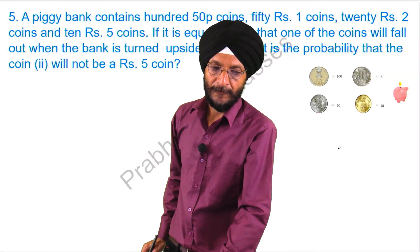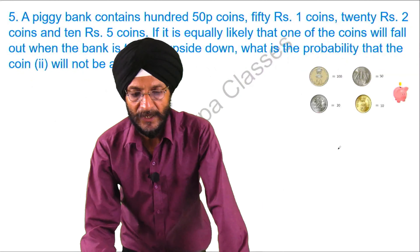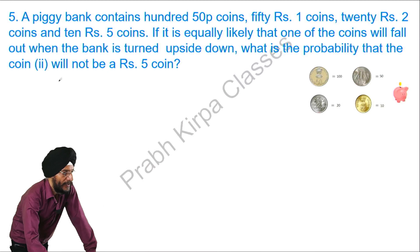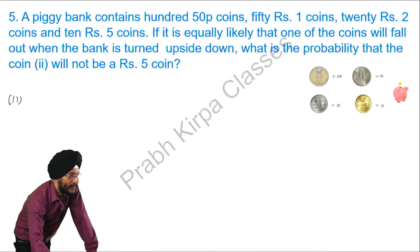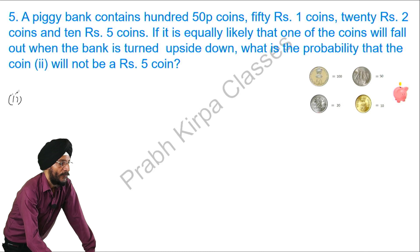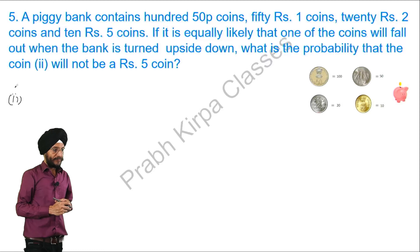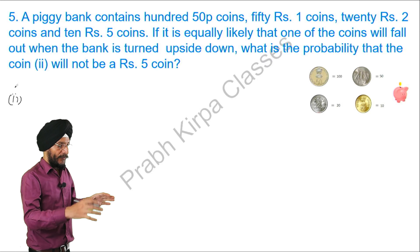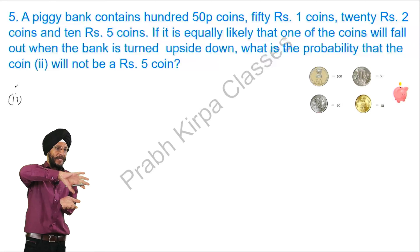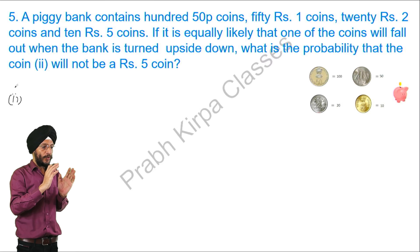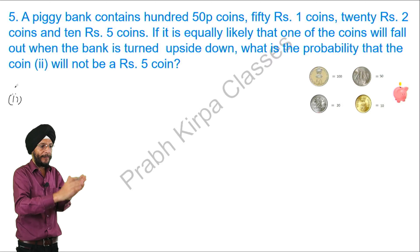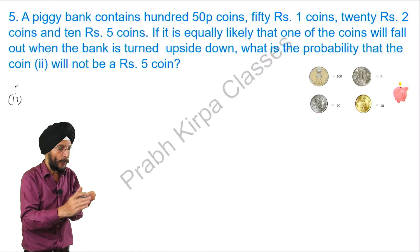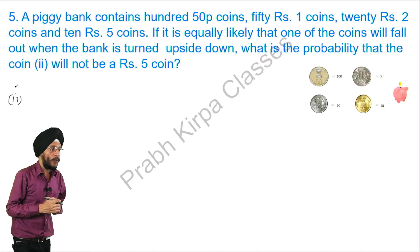Now the second part says: what is the probability that the coin will not be a 5-rupee coin? In other words, when the piggy bank is turned upside down, the coin that comes out should not be the 5-rupee coin, but can be any other coin — the 50 Paisa coin, 1-rupee coin, or 2-rupee coin.